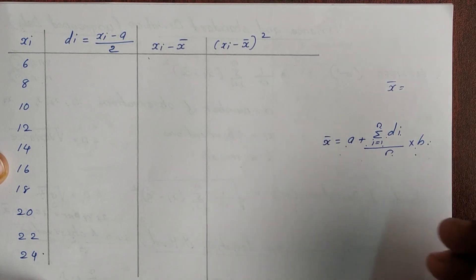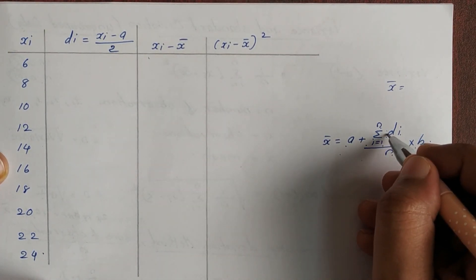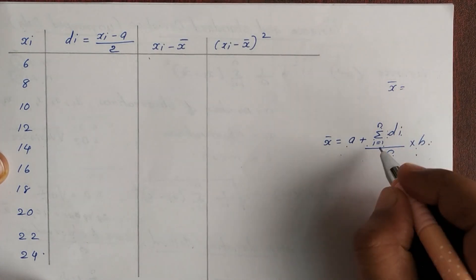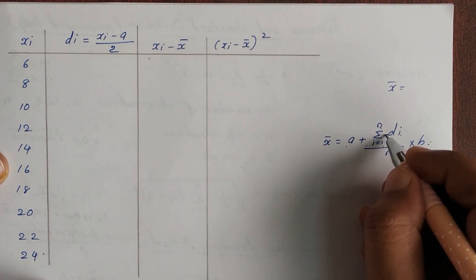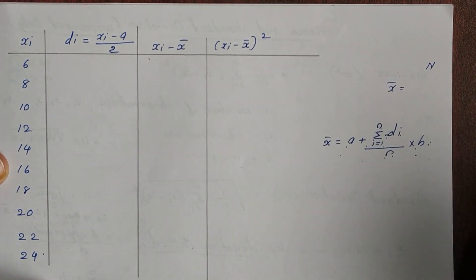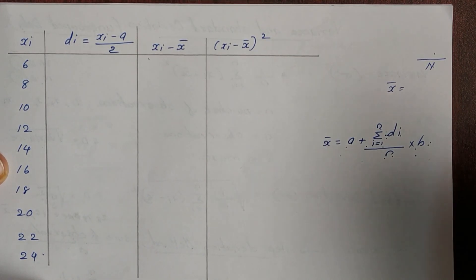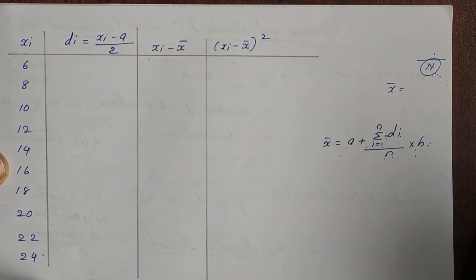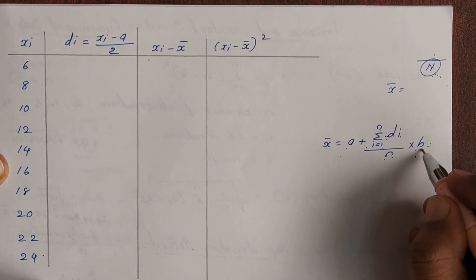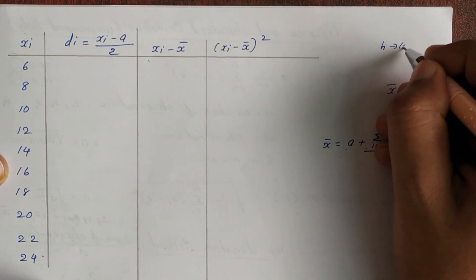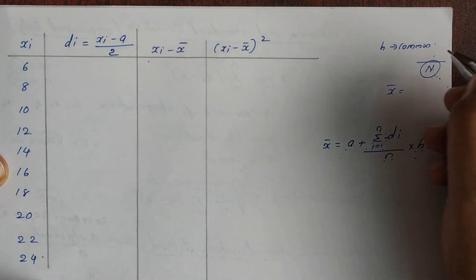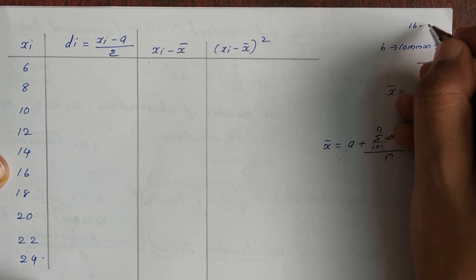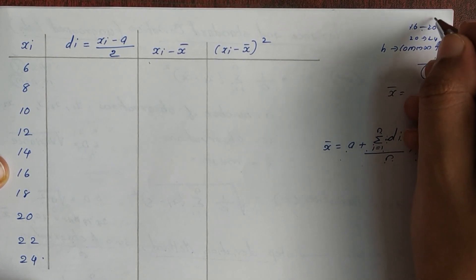In the grouped data case, we use fi (frequency). For continuous frequency distribution, the denominator is capital N (total frequency). We include all frequencies and use capital N to denote the total. H is the common factor — specifically, the class size — because class size is a common factor. For example, if the classes are 16 to 20 and 20 to 24, the common factor H equals 4.